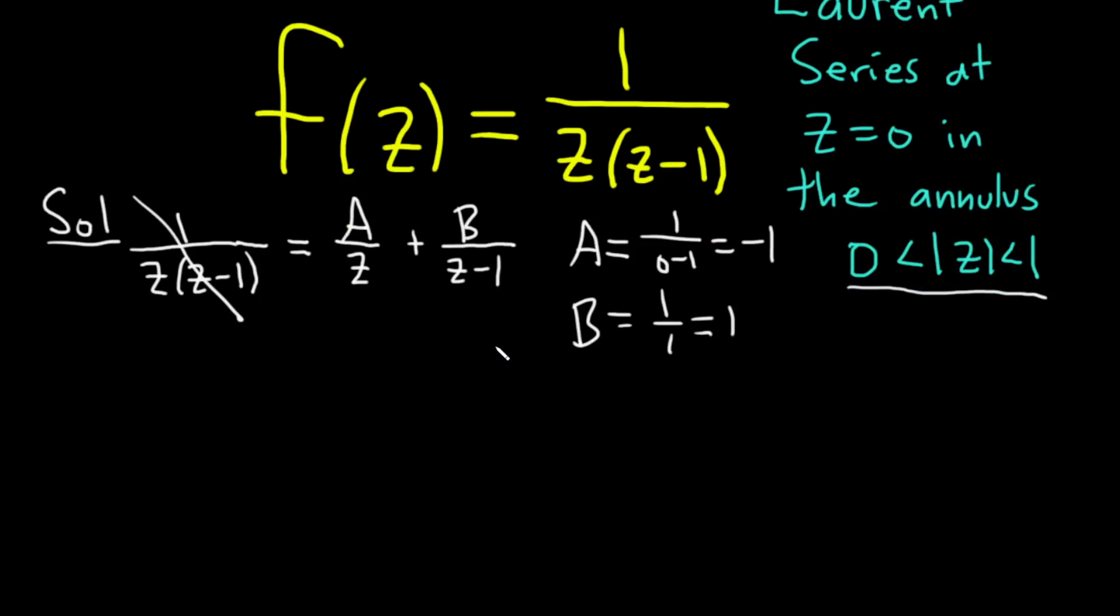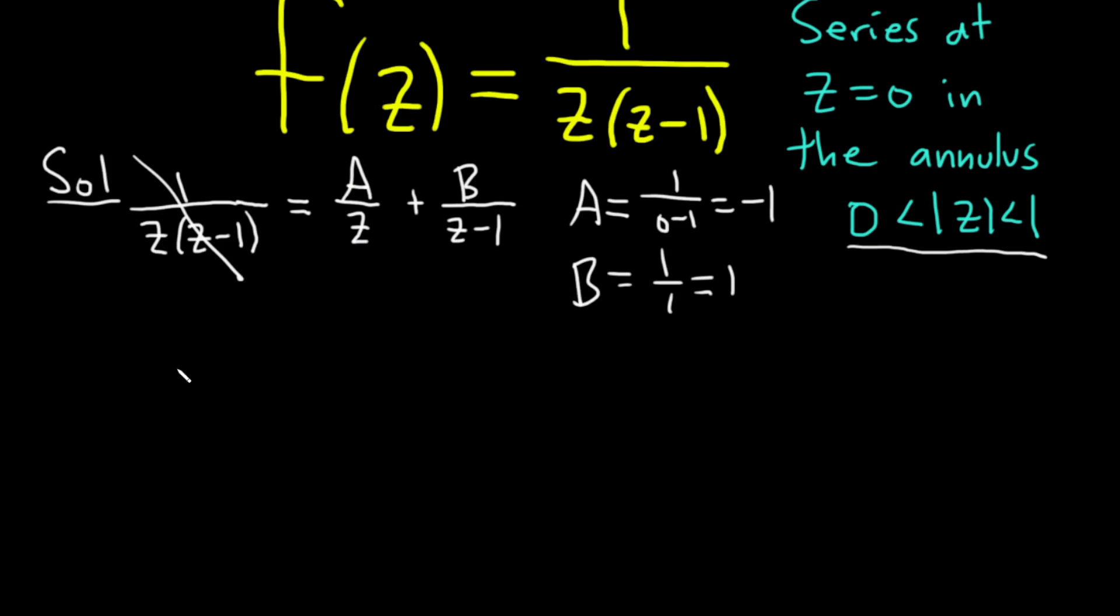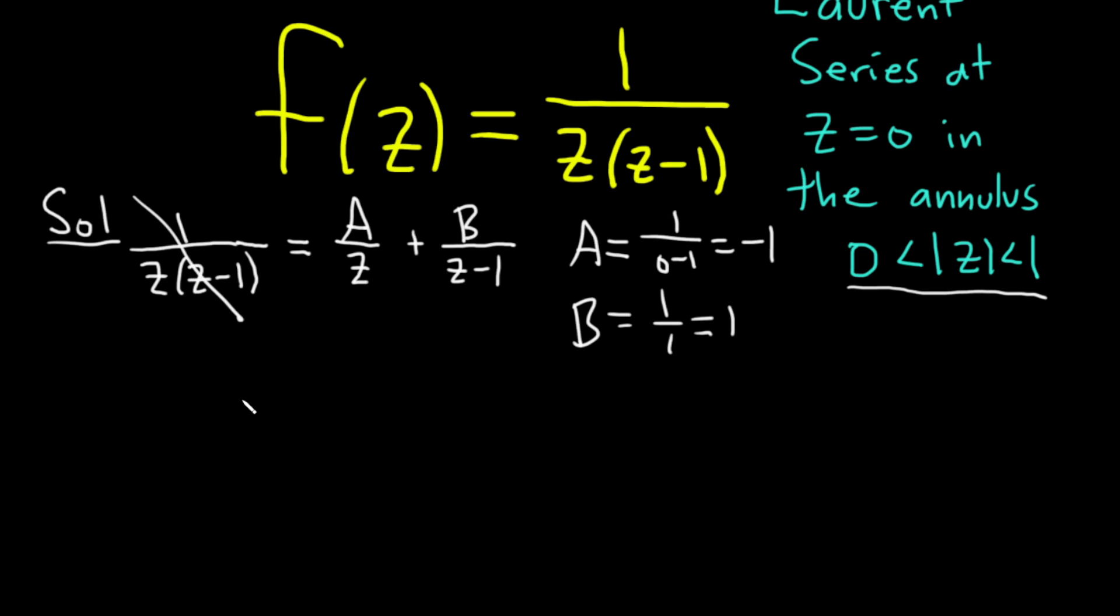So our function can be written now as 1 over z, z minus 1 is equal to... So A is negative 1, so it's minus 1 over z. Plus, and then B is 1, so it's 1 over z minus 1.